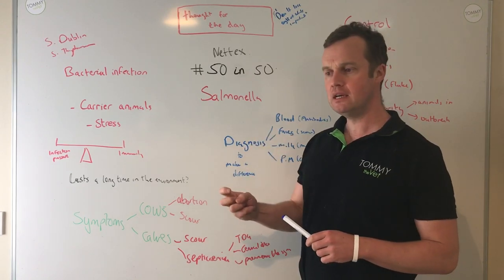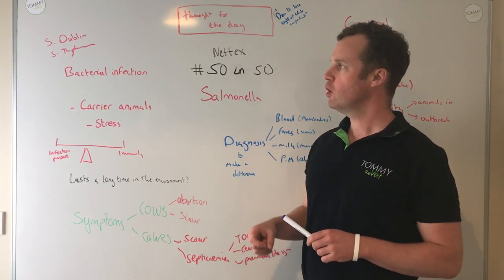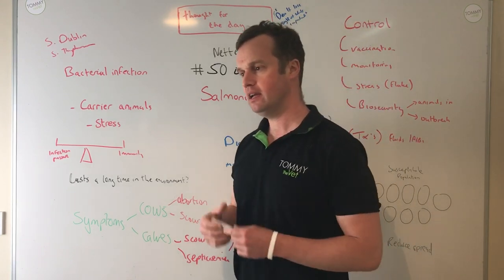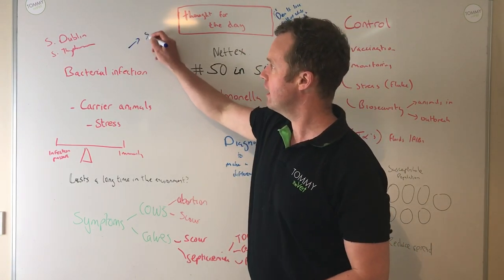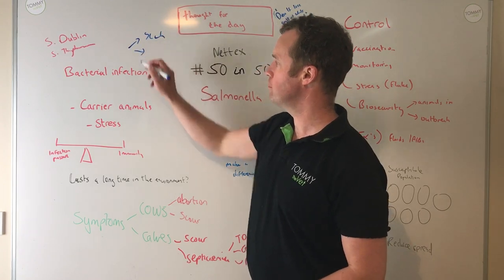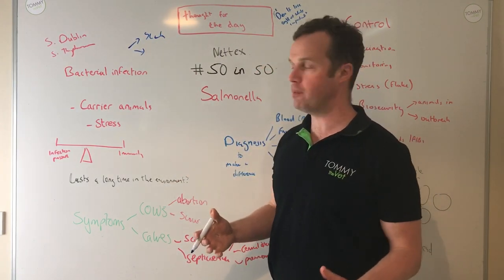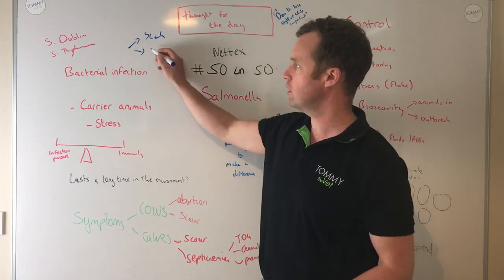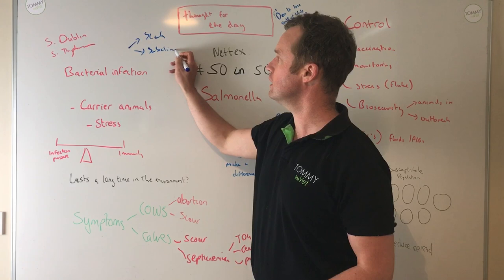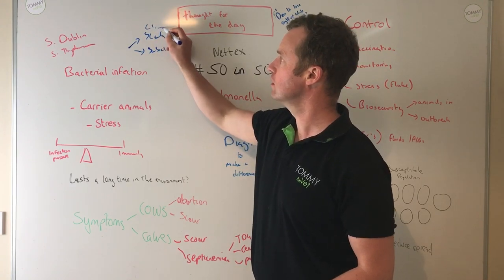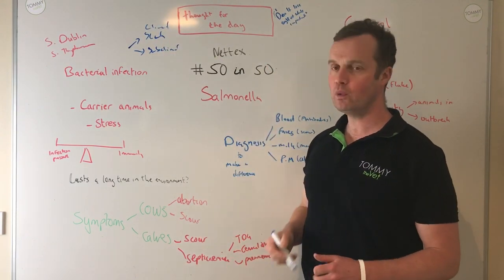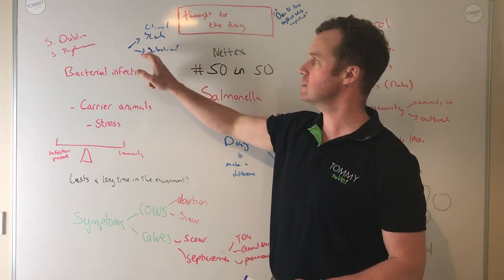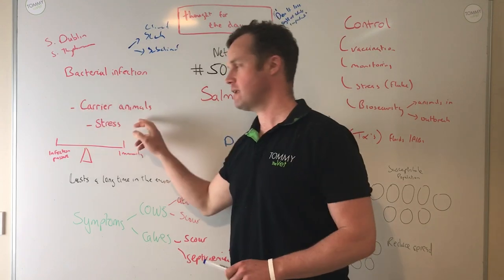The challenge with Salmonella is it causes a number of clinical signs. With animals that have been exposed to the bacteria, there are options: becoming sick, or mounting an immune response and getting better. Sometimes we won't even see that — we call that subclinical. So we have both clinical disease and subclinical disease. With Salmonella you can get animals with either clinical or subclinical signs, including carrier animals.